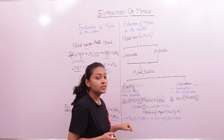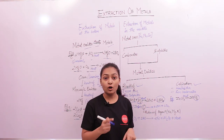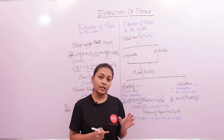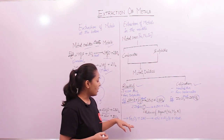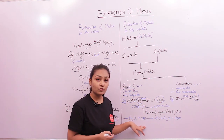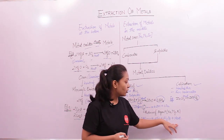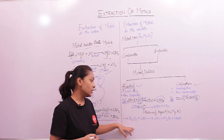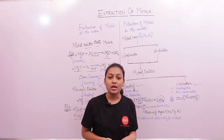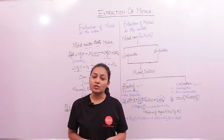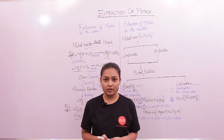When highly reactive metals are used as reducing agents, the reaction is highly exothermic and the resulting metal is obtained in a molten state. For example, when iron oxide is heated in the presence of aluminium, it produces iron and aluminium oxide along with a lot of heat. This equation is also called the thermite reaction.